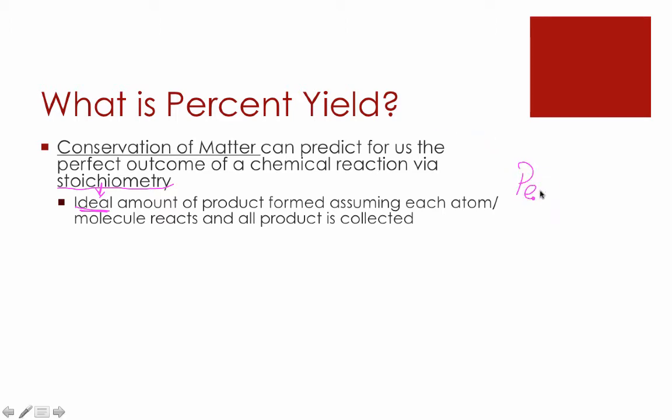So stoichiometry predicts the perfect outcome of the experiment. Maybe we can write that over here: the perfect outcome, best possible scenario. And there's actually a word that we use to describe this outcome that we haven't used yet, and that is known as the theoretical yield. In theory, we should be able to make this amount of product, whatever our stoichiometry predicts for us.